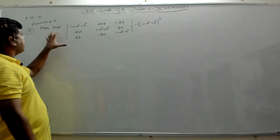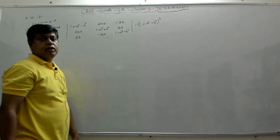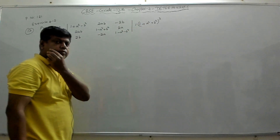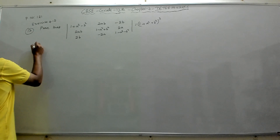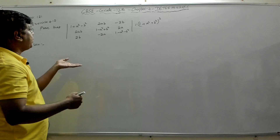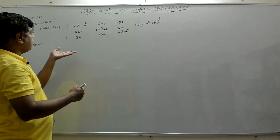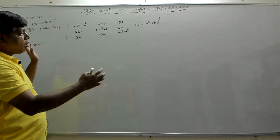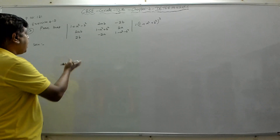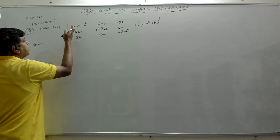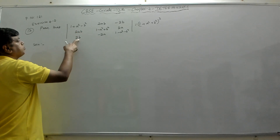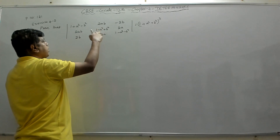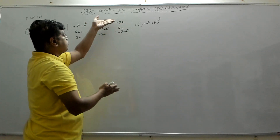Problem 13: prove that the value of this determinant is equal to (1 + a² + b²)³. We have to show that the value equals this. As a solution, we first try to see whether we can get a particular row or column with the same elements by adding the rows or columns. If we add all three rows, we get 1 + a² - b² + 2ab + 2b; adding everything gives 1 - a² + b², so they don't come out the same.